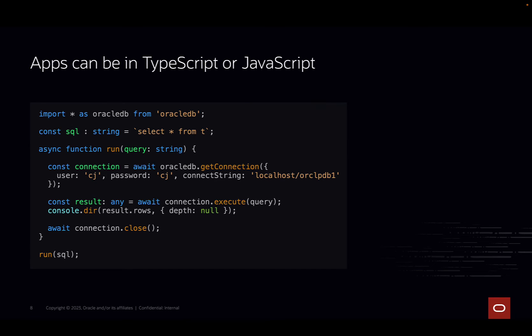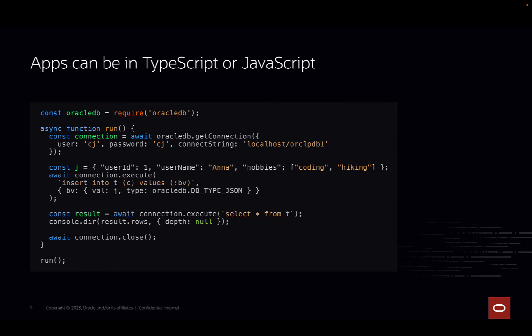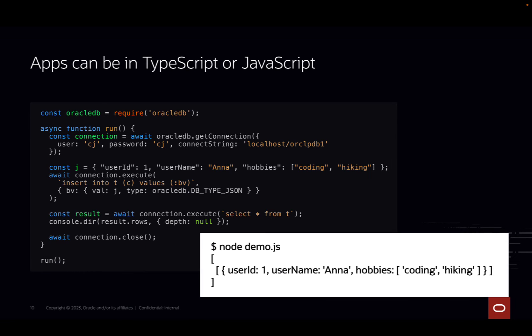Applications can be in TypeScript like this, or pure JavaScript as shown here. The Node Oracle DB API is simple and easy to use. This example connects to Oracle Database, inserts a JavaScript object into an Oracle Database JSON column, and then queries the data back.